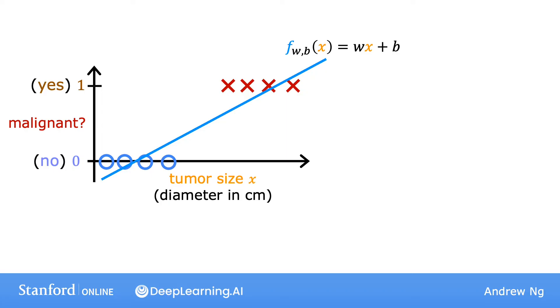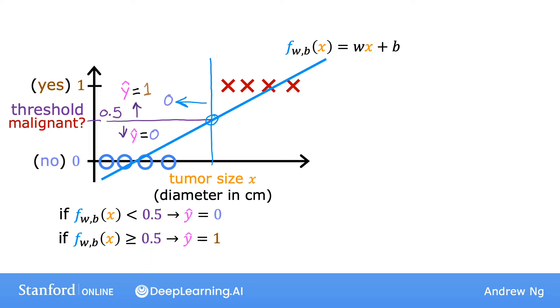One thing you could try is to pick a threshold of, say, 0.5, so that if the model outputs a value below 0.5, then you predict y equals 0, or not malignant. And if the model outputs a number equal to or greater than 0.5, then predict y equals 1, or malignant. Notice that this threshold value 0.5 intersects the best-fit straight line at this point. So if you draw this vertical line here, everything to the left ends up with a prediction of y equals 0, and everything on the right ends up with a prediction of y equals 1.